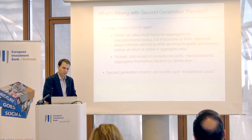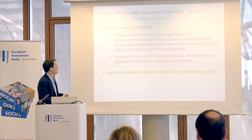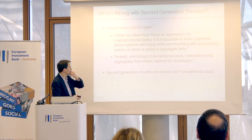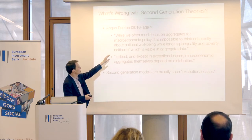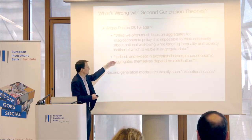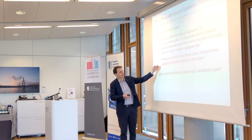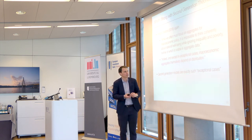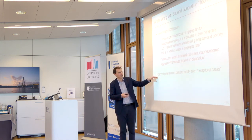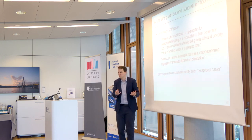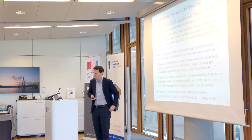The second part of Deaton's quote addresses this directly: except in exceptional cases, macroeconomic aggregates themselves depend on distribution. The second generation models are exactly these exceptional cases — because everything kind of scales and rich people are just scaled versions of poor people, distribution doesn't matter for aggregates. This is precisely what the third generation of theories tries to fix.